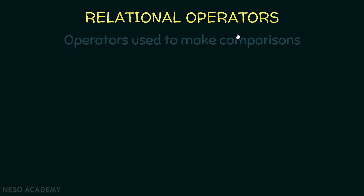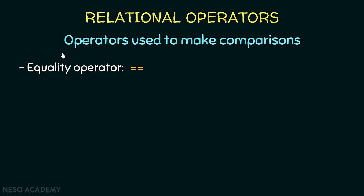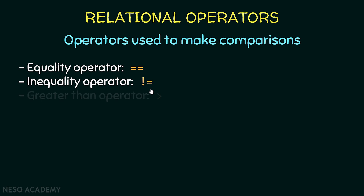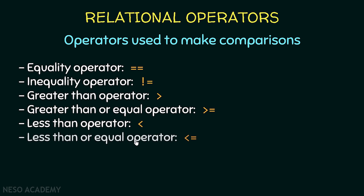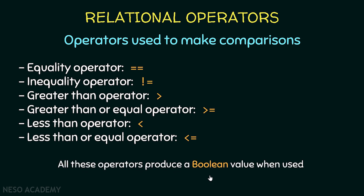Relational operators are used to make comparisons in our program. Suppose we have two values — for example two numbers or two strings — and we want to make some comparisons. We have the equality operator using two equal signs, the inequality operator which is exclamation mark equal sign meaning not equal, the greater than operator, the greater than or equal operator, the less than operator, and the less than or equal operator. All these operators produce a boolean value when used.